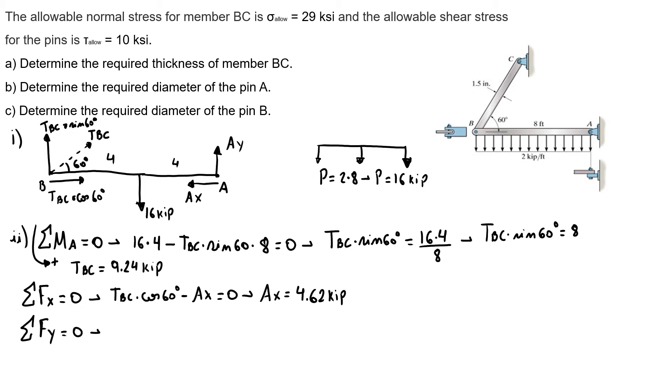I have TBC times sine of 60 plus AY minus 16 equals 0. So to find my force in A, I have A squared equals AX squared plus AY squared. So I know my A equals 9.24 kip.